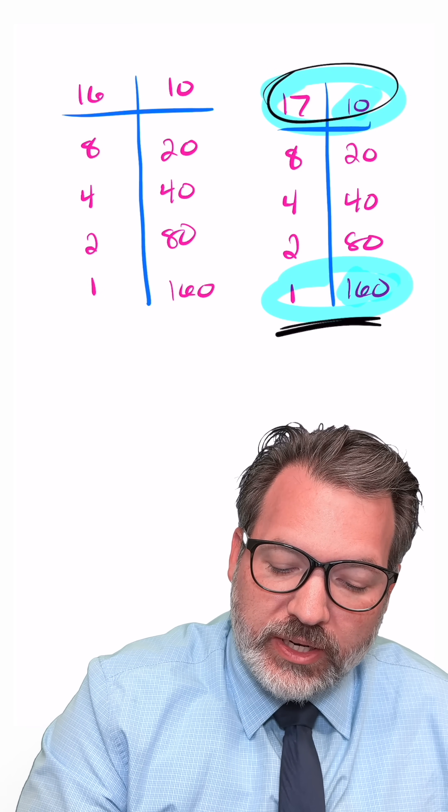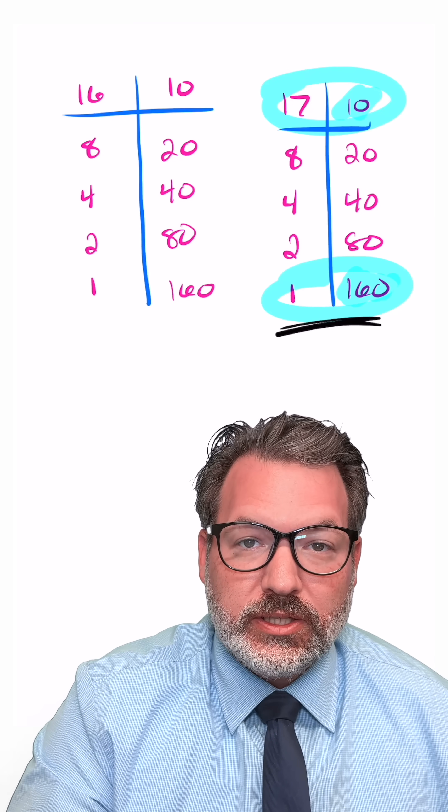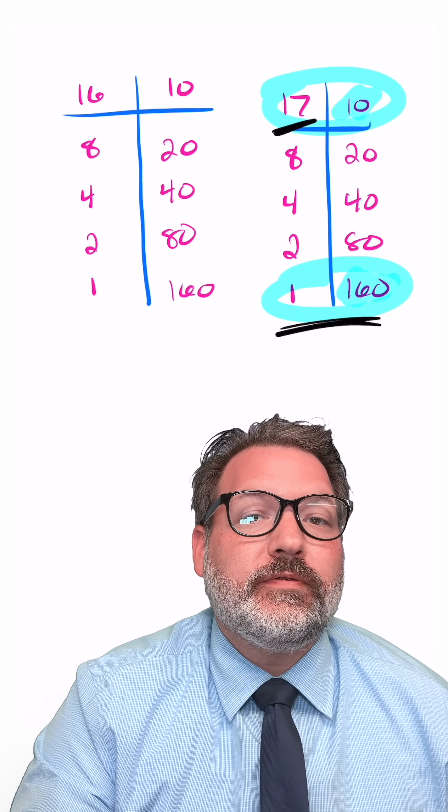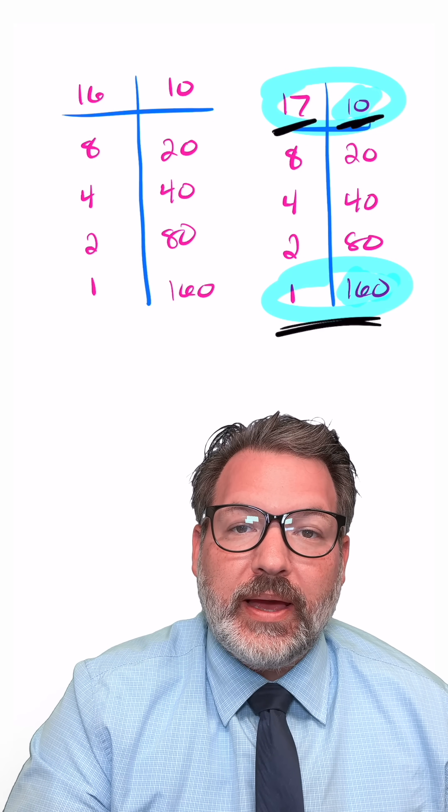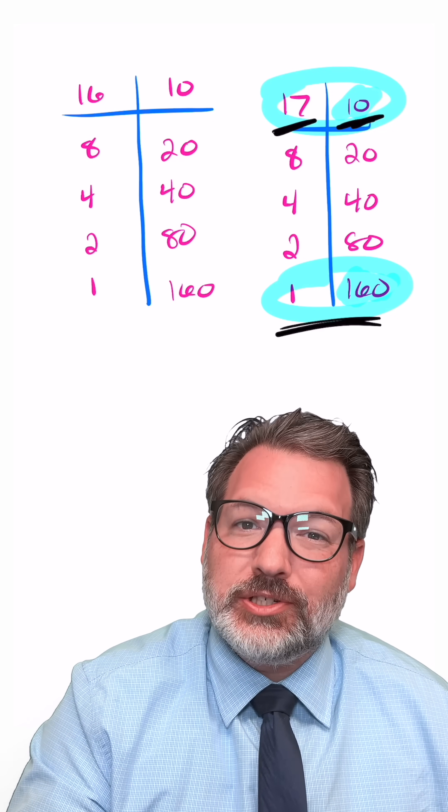Anywhere along the way that we divided something and had to discard a remainder, that must have meant that the thing we were dividing was odd. And so when we go back later to add those rows back in, we are keeping, essentially, that bit of the product that we discarded.